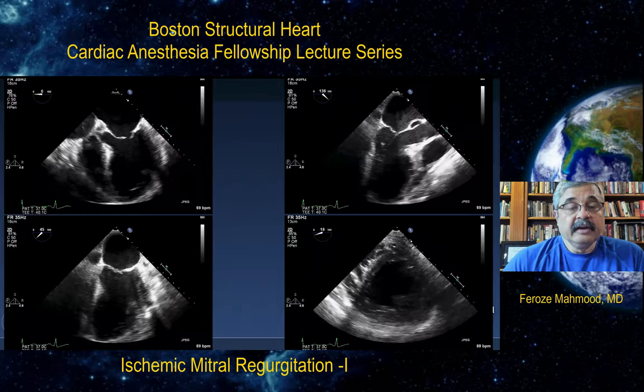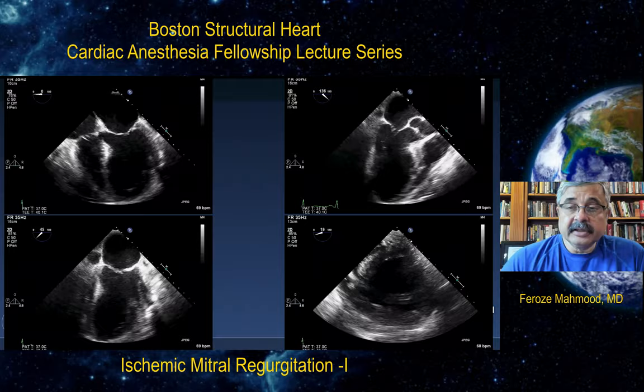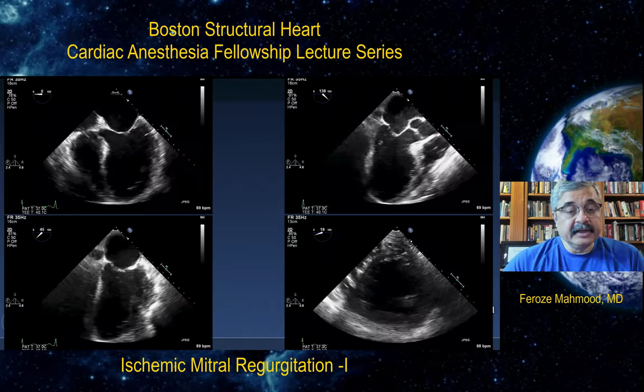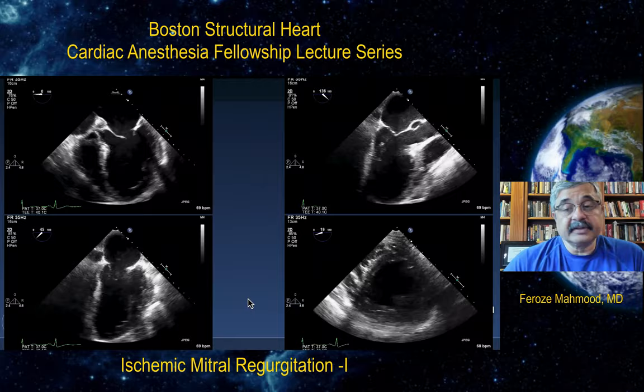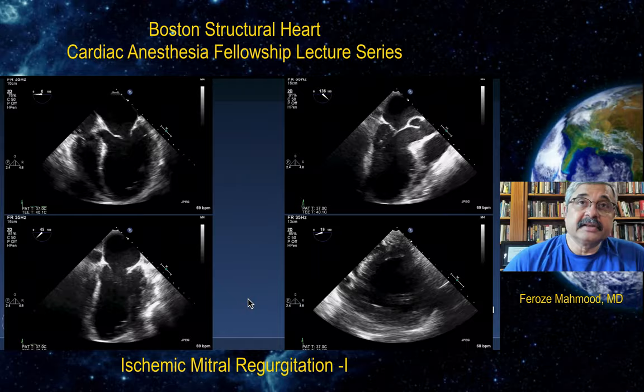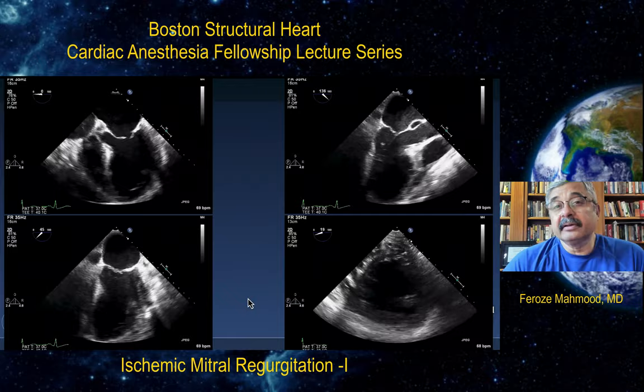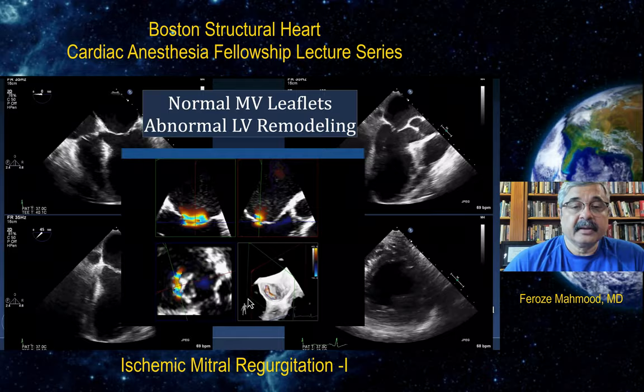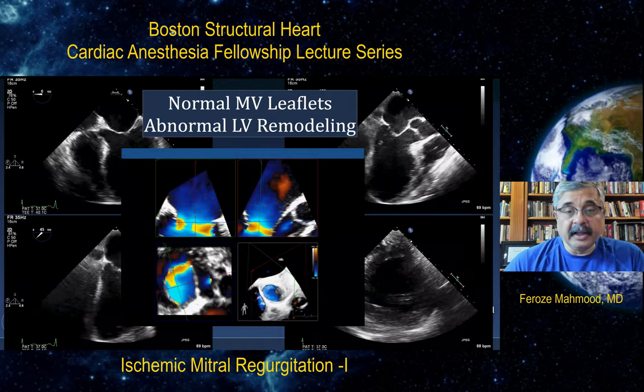Looking at all views of the mitral valve and the left ventricle, it's quite obvious that the leaflets seem to be normal. Particularly the apical and anterior segments of the left ventricle are severely hypokinetic, and the apex is almost akinetic. So it's a problem with the ventricle, reflecting itself as malcoaptation of the leaflets because of imbalance between the closing and tethering forces, leading to significant central mitral regurgitation. Normal mitral valve leaflets with abnormal left ventricular remodeling has led to significant mitral regurgitation.